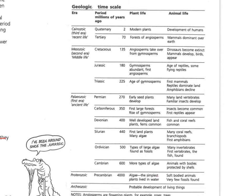You've got the era here, and the period — which is a smaller timescale. Periods to eras are like minutes compared to hours or minutes compared to days; eras are one timescale and periods are a smaller timescale. The next column is plant life and the next column is animal life.